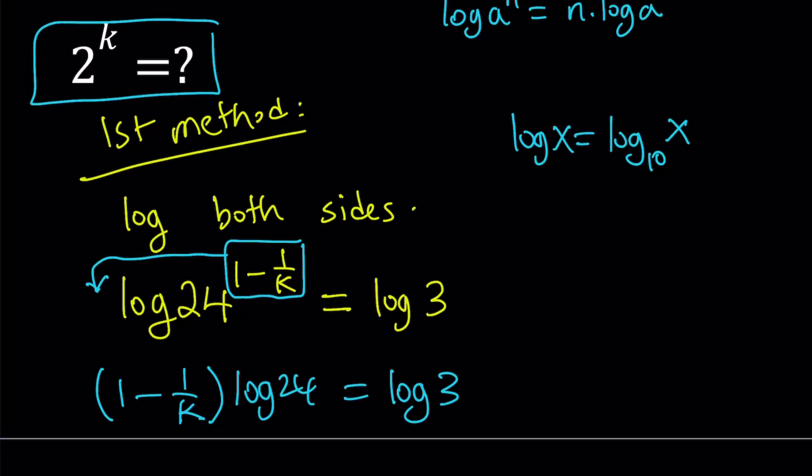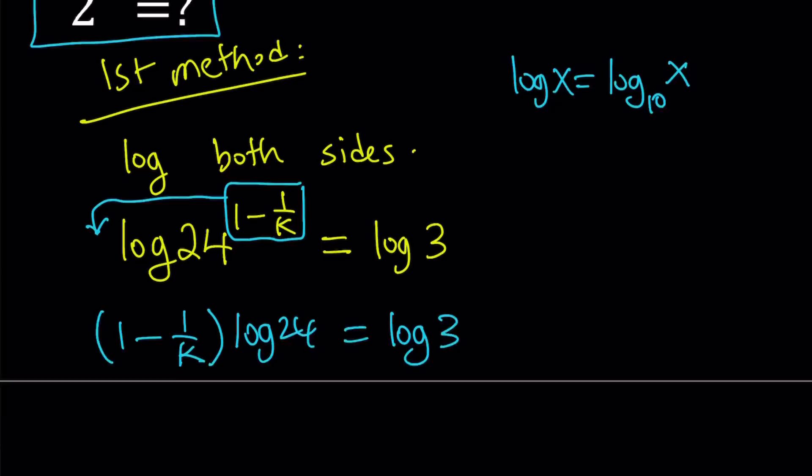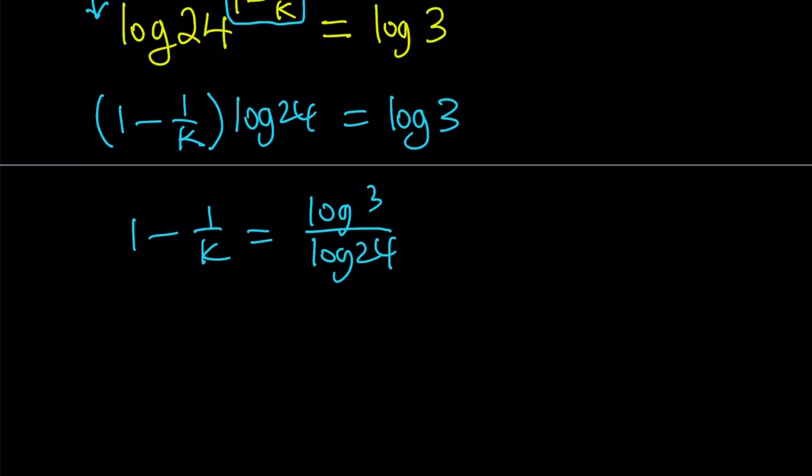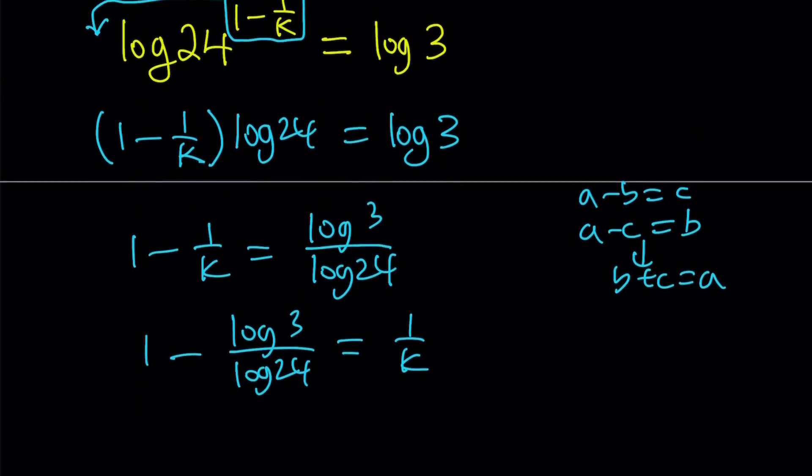We're trying to find 2^k. So it makes sense to isolate the k term, 1 minus 1 over k. So let's go ahead and divide both sides by log 24. And then, since I'm trying to solve for k, why not isolate 1 over k? I can kind of switch around these terms because they are being subtracted on the left-hand side. So in other words, 1 minus log 3 over log 24 is the same thing as 1 over k. These can be switched. Basically, if a minus b equals c, then a minus c equals b because b plus c equals a. Okay. Hopefully that makes sense.